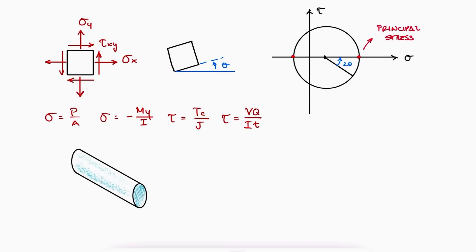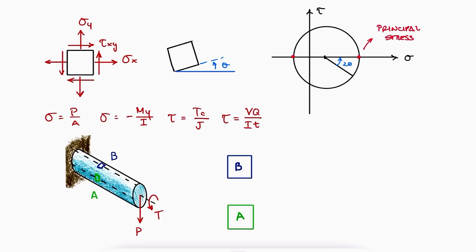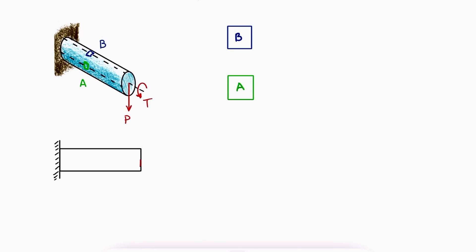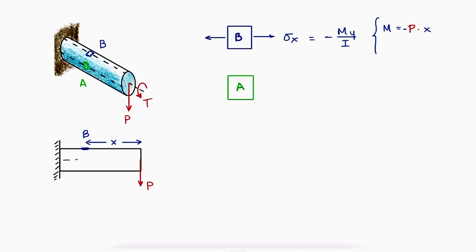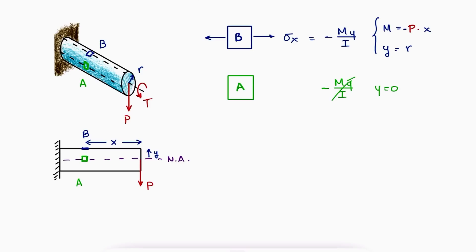For example, for a simple cantilever rod subjected to a point load and torque, we can study the plane stress element on two different locations a and b. Stress element b is subjected to a positive normal stress in the x direction due to the bending moment caused by the point load P. The moment would be equal to P times x, the distance from the stress element b to the point load P. The value for y would be the distance from the neutral axis to the top of the beam, which is the radius of the rod. Since stress element a is located on the neutral axis, the value of y would be zero and therefore stress element a would not be subjected to this bending stress.